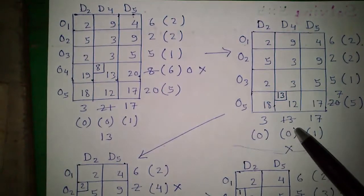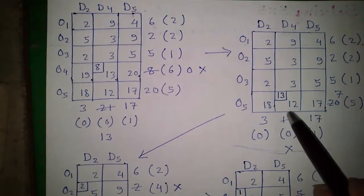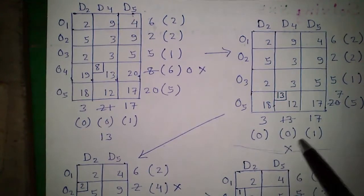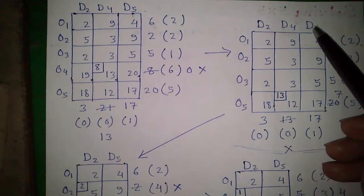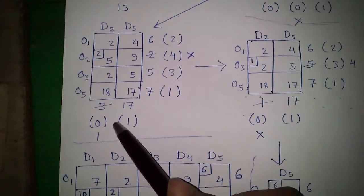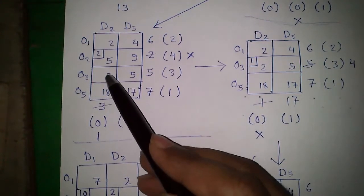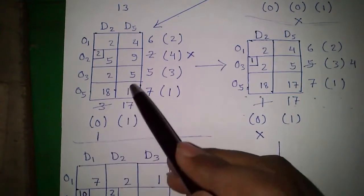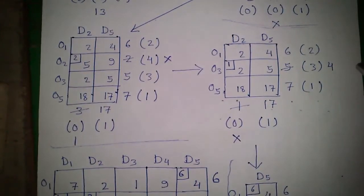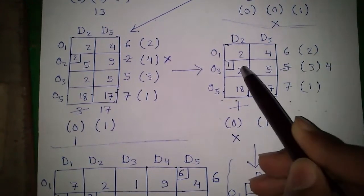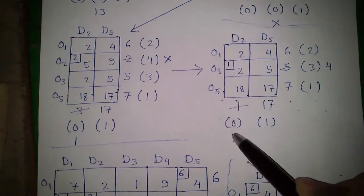Again, same process. The largest number is 5, smallest number is 12. We allocate 13 out of 20; the demand becomes 0 and supply becomes 7. We will continue with D2 and D5. Again, same process. The largest number is 4, smallest number is 5. We allocate 2 out of 3; demand becomes 1 and supply becomes exhausted. Continuing the process, the largest number is 3, smallest number is 2, and 1 out of 5 is allocated. It becomes 0 — exhausted — and the remaining supply becomes 4.